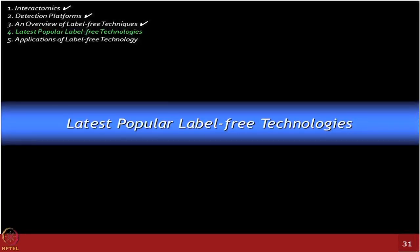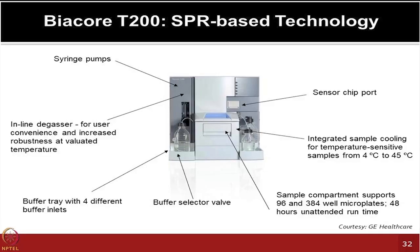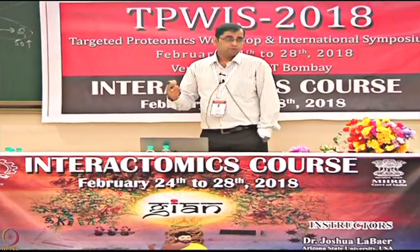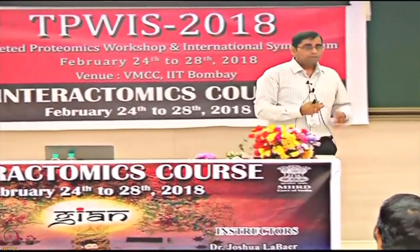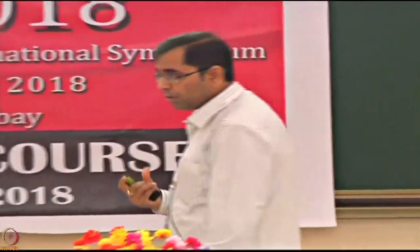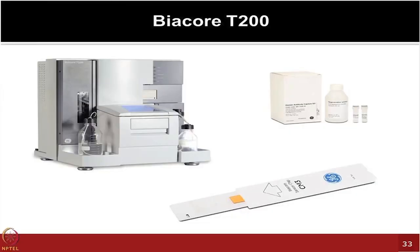One of the latest popular technologies is the Biacore T200, offered by GE Healthcare. There are many types of chips available — carboxymethyl-based surfaces, or nickel-NTA chips useful for His-tag-based proteins — so you can select the right chip for your use. The Biacore T200 is currently an industry-leading, GLP-approved technology, meaning the data obtained can be sent for FDA and other regulatory approvals. However, these technologies are very costly considering the expense per experiment.